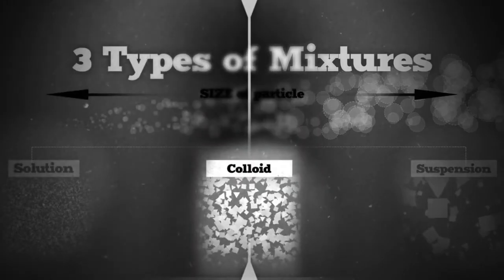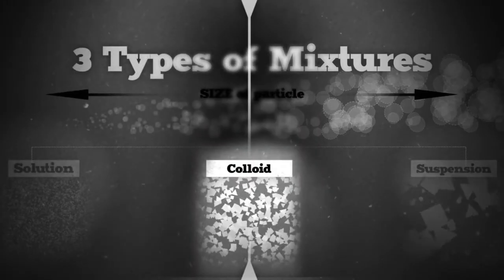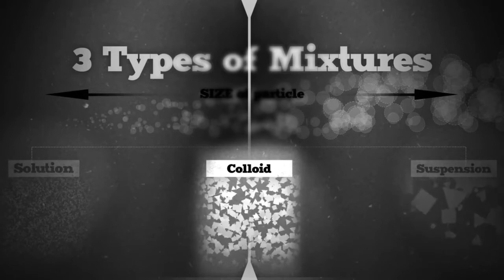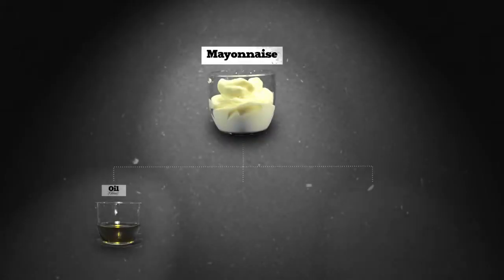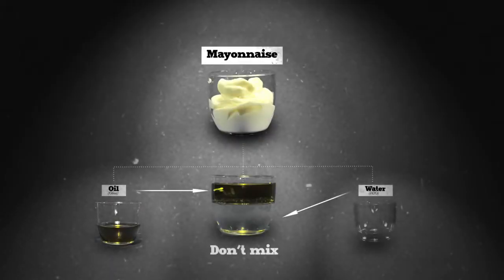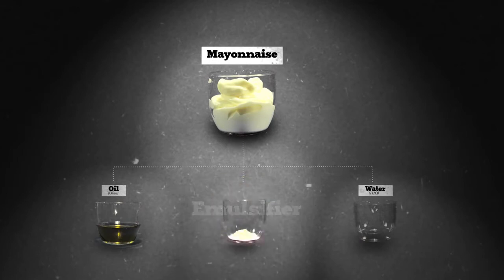The last type of mixture is called a colloid, which is somewhere between a suspension and a solution. It's when you take two materials that don't dissolve and you make the particles so small that they can't separate. Mayo is what happens when you take oil and water, which don't mix, and you bind them together, usually with the help of another substance called an emulsifier. In the case of mayo, it's lecithin found in eggs.